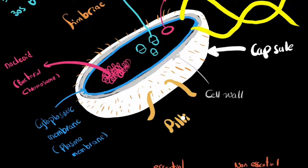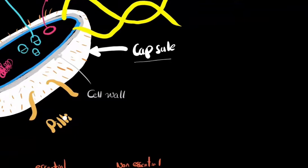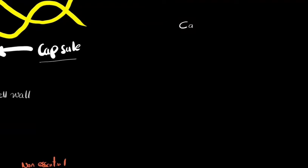Inside the bacterial cell there is genetic material in a region called the nucleoid, where the bacterial chromosomes are shown here in pink. There are ribosomes, represented in very light blue — they are the protein factories of the cell, synthesizing all cell proteins. The circular pink shape represents the plasmid, which is a circular extra-chromosomal double-stranded DNA. Now let's get started and talk about each component in detail, starting with the capsule.